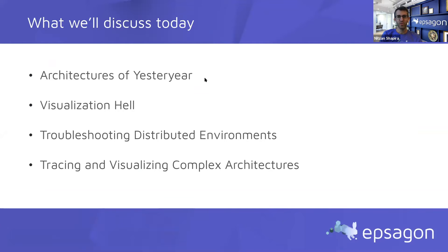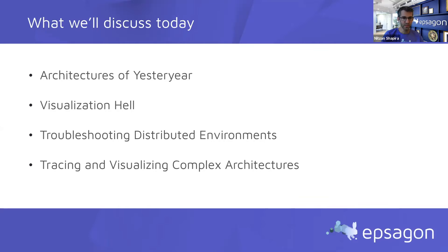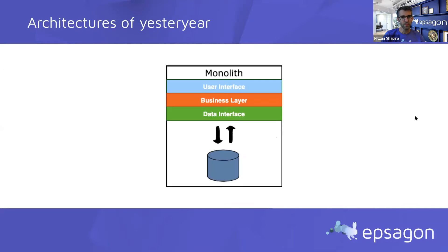We're going to talk about the architectures of yesteryear — what we used to have and what we have today, which is what we call a visualization hell and the troubles that come with microservices and distributed complex environments. Then how do you troubleshoot problems there, especially in production where the cost of downtime can be very high. What we used to have, which most of you are familiar with, is the monolithic design pattern.